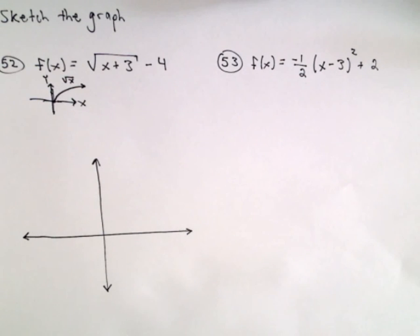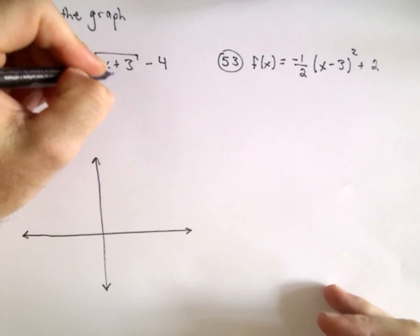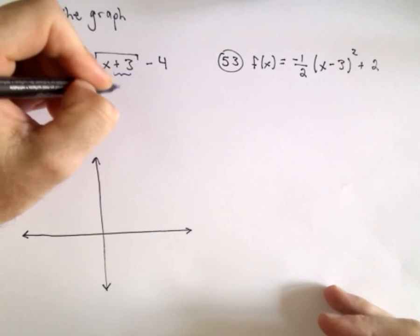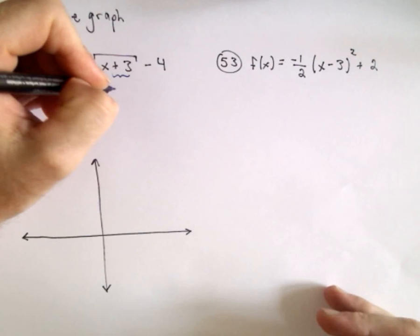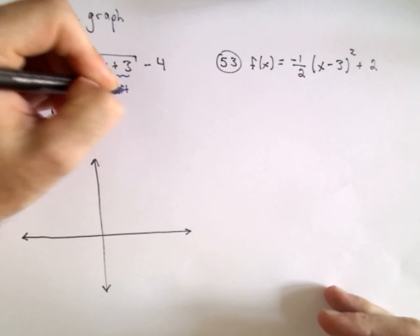So remember the plus 3, it's underneath the radical, that's actually going to move the graph of square root of x. It's going to move it to the left three units.